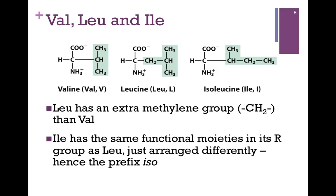Next we have valine, leucine, and isoleucine. The side chains are highlighted in green. If we compare valine and leucine, we'll see that they're very similar. Leucine has an extra methylene group, and so we can distinguish them in that way. And now if we compare leucine and isoleucine, we can see they have the same functional groups, but they're just arranged a little bit differently. That's why we refer to them as leucine and isoleucine.